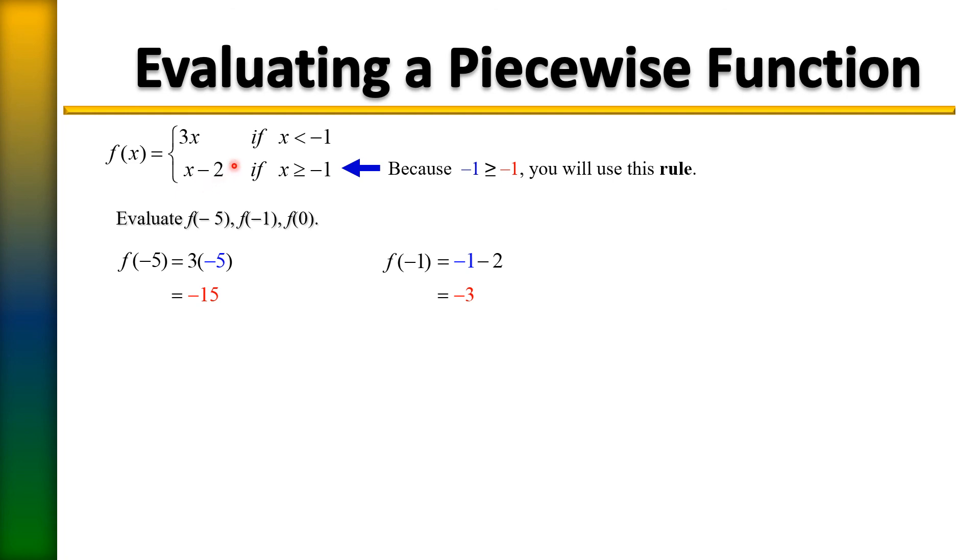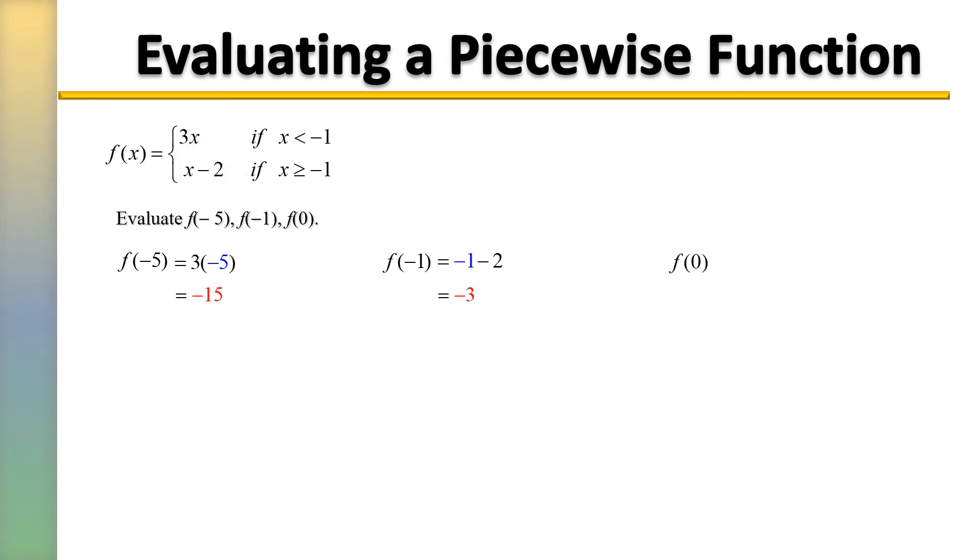So again we're going to use that second function where we're going to remove the x and replace it with 0. When we do so, f of 0 will equal negative 2.